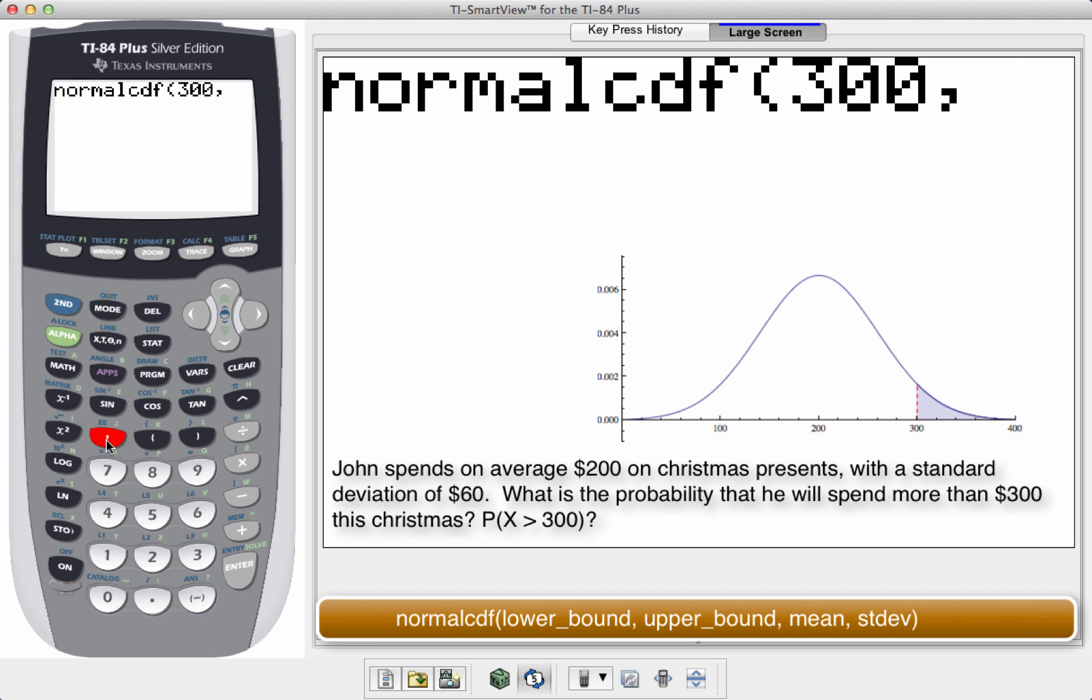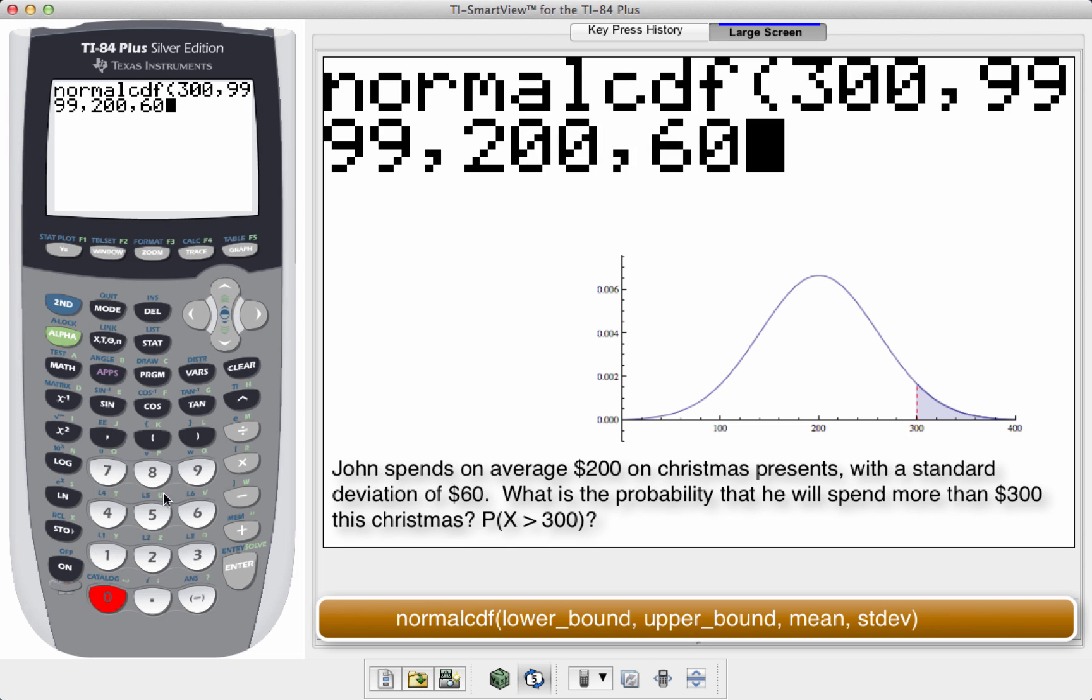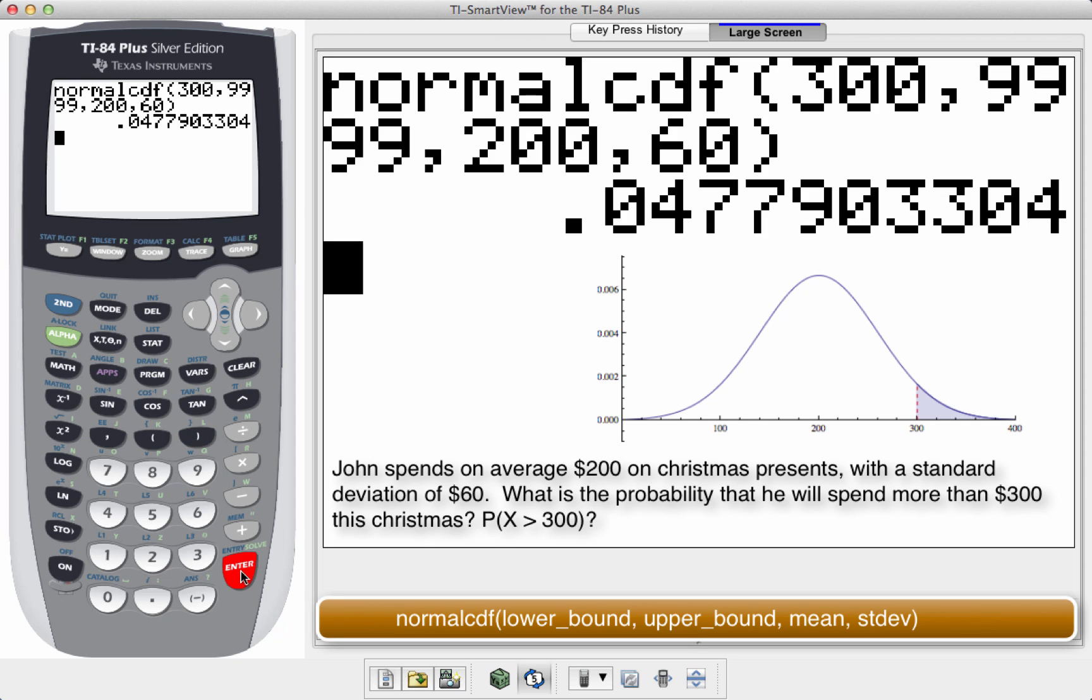Now I choose a ridiculously large number like 9,999. The mean that I spend, the average I spend on Christmas would be $200 with a standard deviation of $60. Close the parentheses. Let's hit enter.